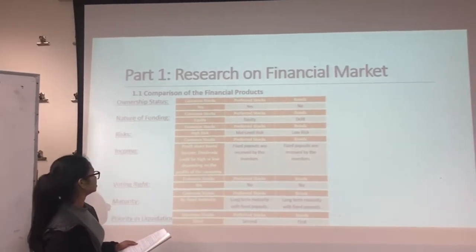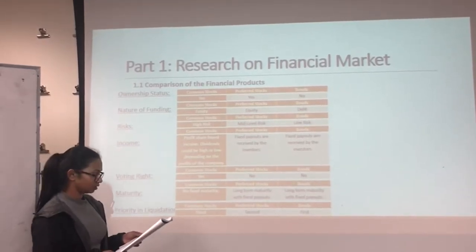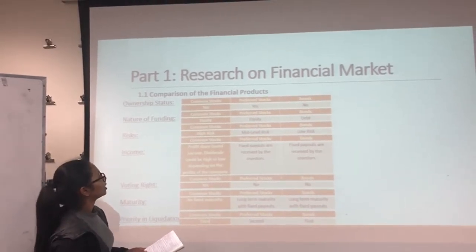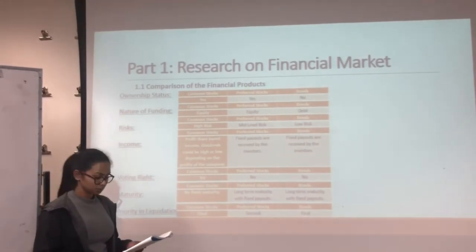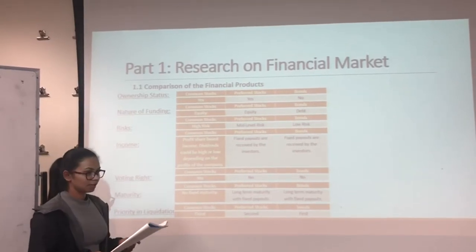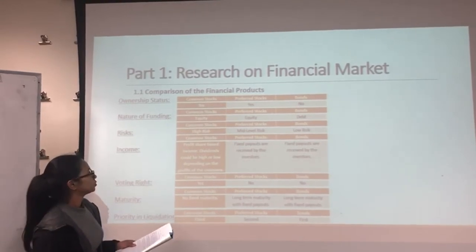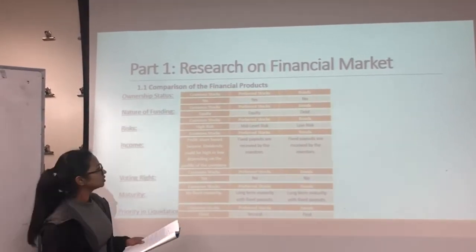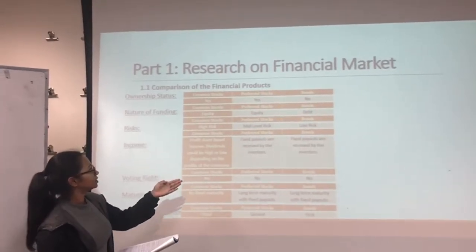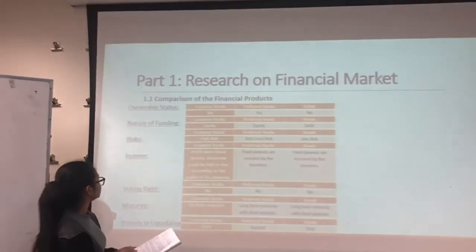The next criterion is nature of funding, which explains whether the fund is identified as equity or debt. Common stocks and preferred stocks are identified as equity, whereas bonds are debt. The next criterion is risk. Every investment has some degree of risk. Bonds have low risk, preferred stocks have mid-level risk, and common stocks have a high level of risk.